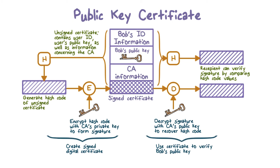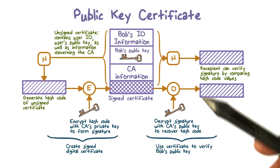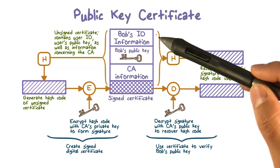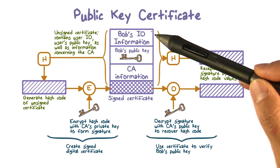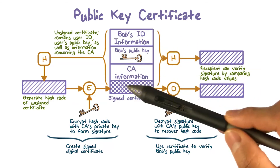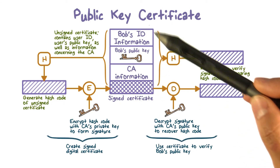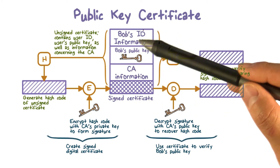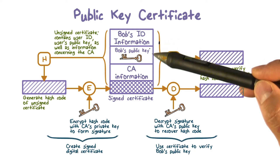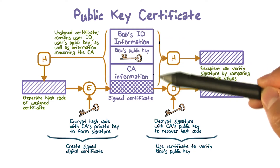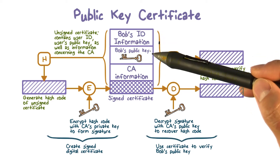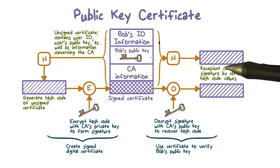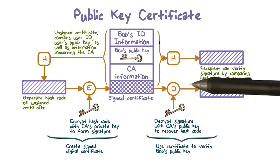The solution to this problem of public key forgery is to use a public key certificate. In essence, a certificate consists of Bob's public key, Bob's information such as his user ID, name, and address, and the certificate authority's information. The whole block is signed using the certificate authority's private key. The certificate can also include other information such as the period of validity — for how long this certificate is valid for this public key, say, one year.